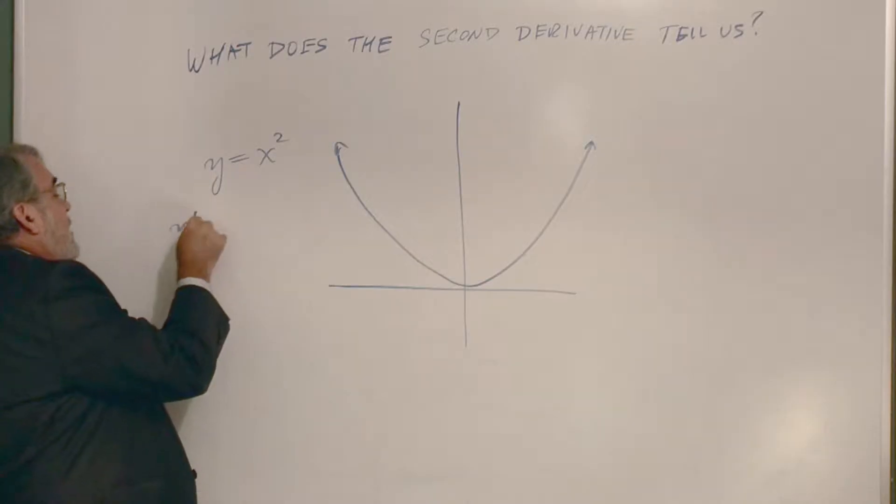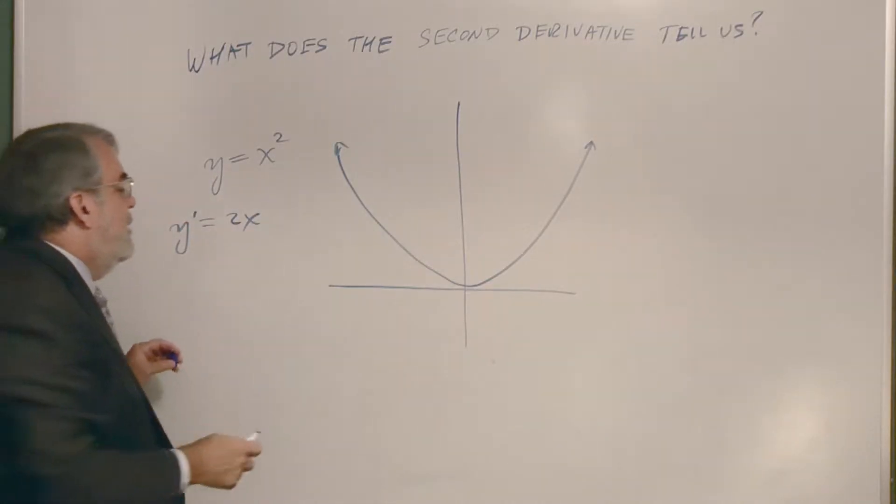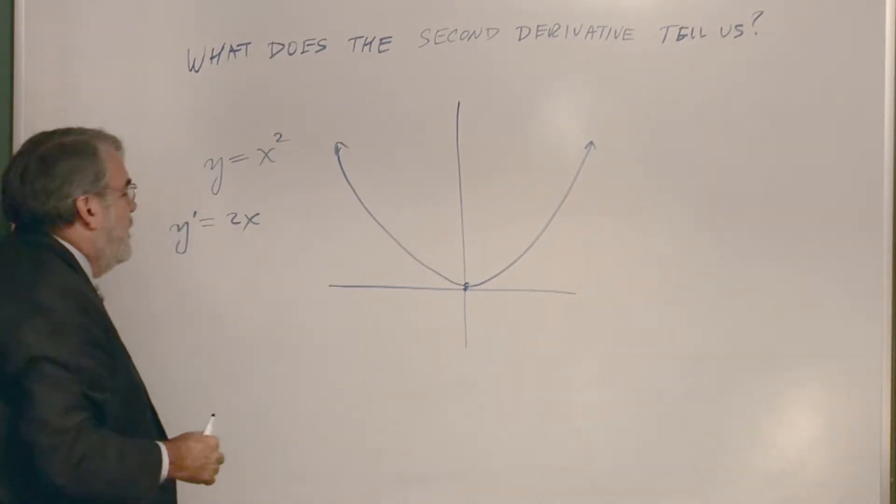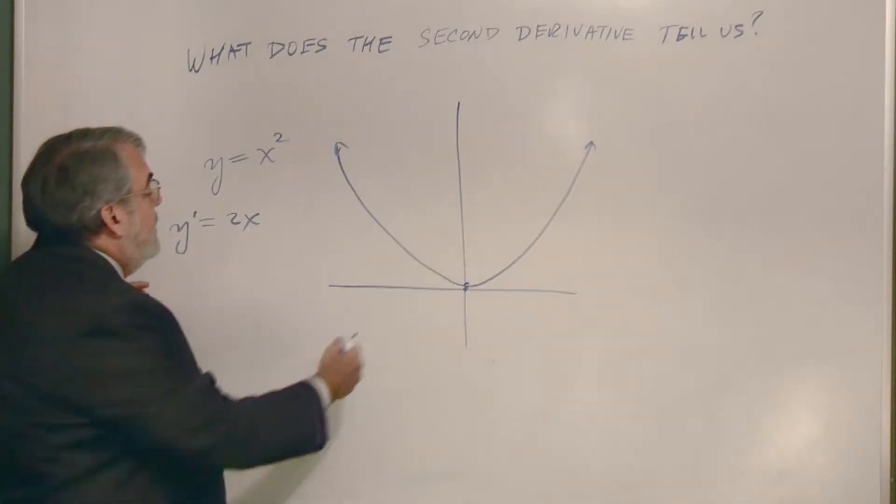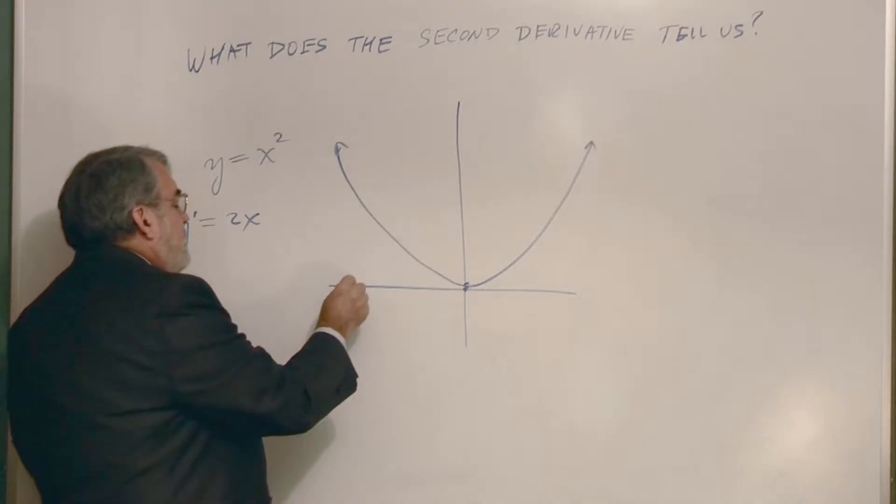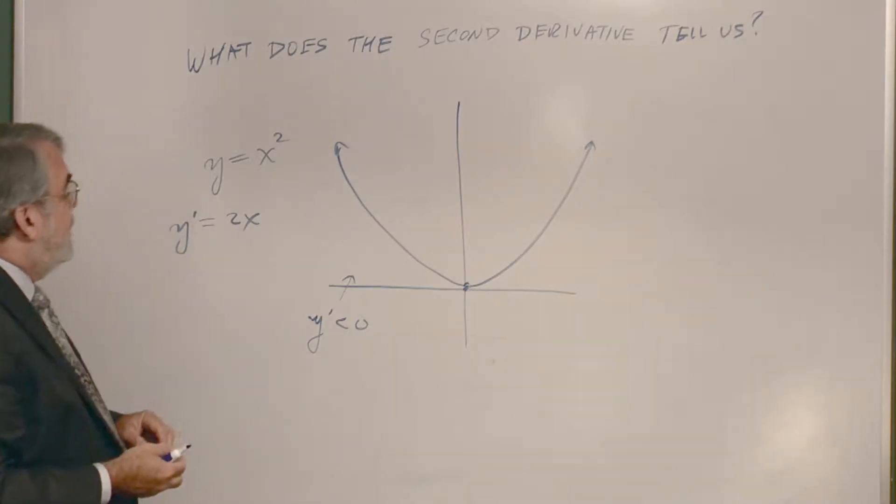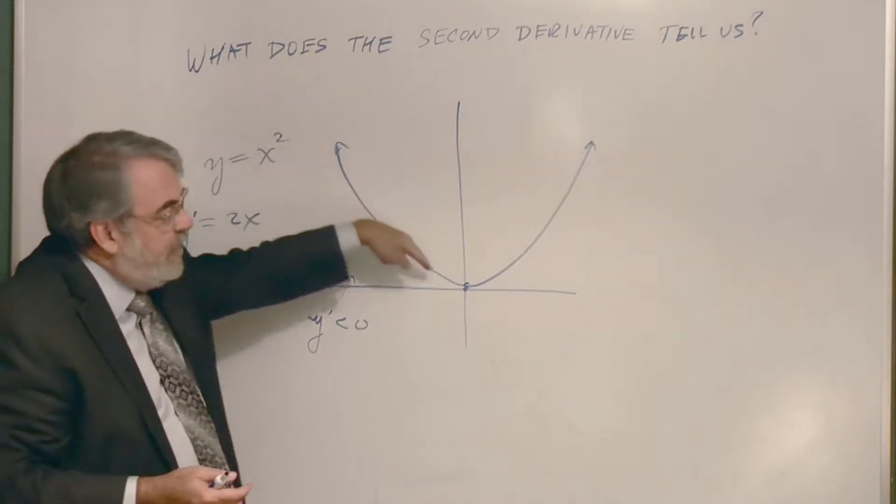And so the first derivative is 2x and indeed when, that's supposed to hit at the origin here, when x is negative, if you plug in a negative number then the derivative is negative. So over here, the first derivative is negative, which tells us that it should be decreasing. And it is. As you move left to right, it's falling.